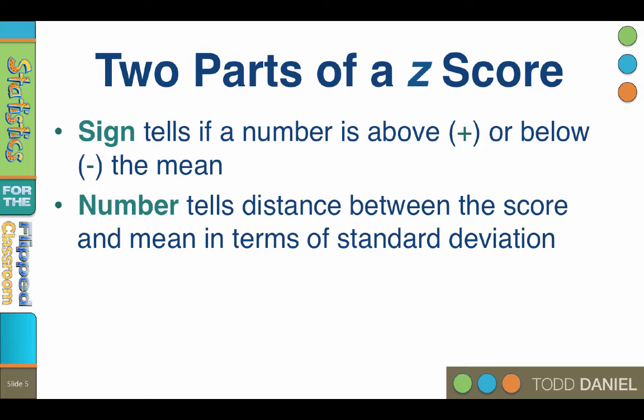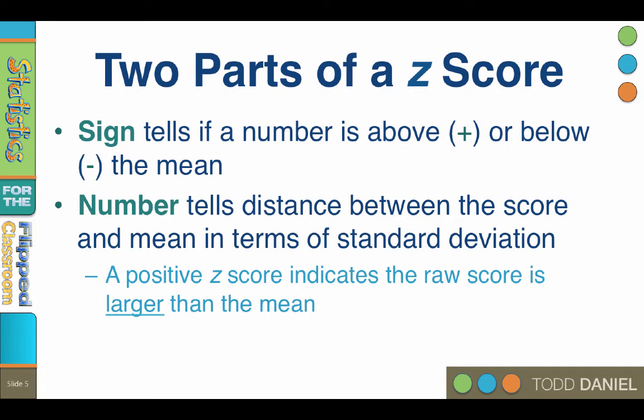So here are some things to remember. Number one, a positive z-score indicates that the raw score is larger than the mean. Of course, a negative z-score indicates that a raw score is smaller than the mean. And number two, the mean is z equals 0.00.